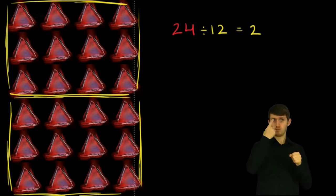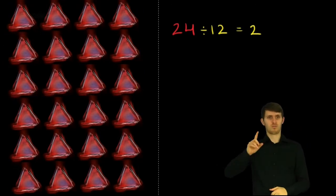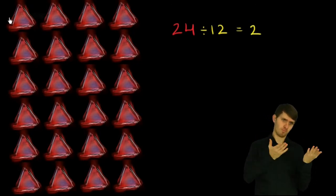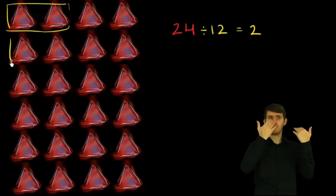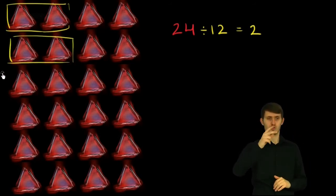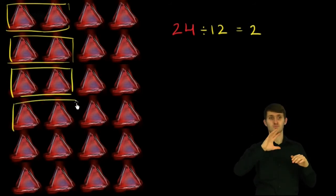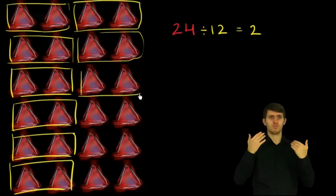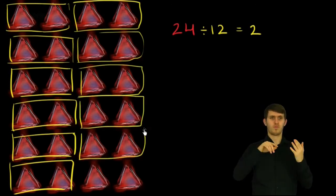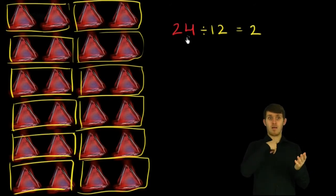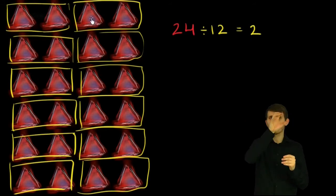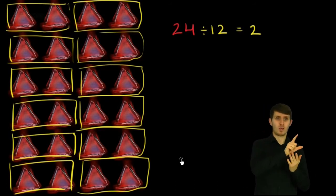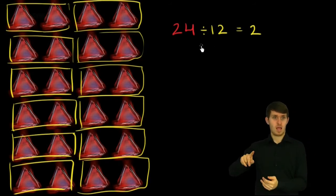Another equally reasonable way is to divide 24 into 12 equal groups instead of groups of 12. So if I divide into 12 equal groups: 1, 2, 3, 4, 5, 6, 7, 8, 9, 10, 11, 12. How many do you have in each group? You have two. So 24 can be viewed as 24 divided into 12 equal groups giving 2 each, or 24 divided into groups of 12 giving 2 groups.